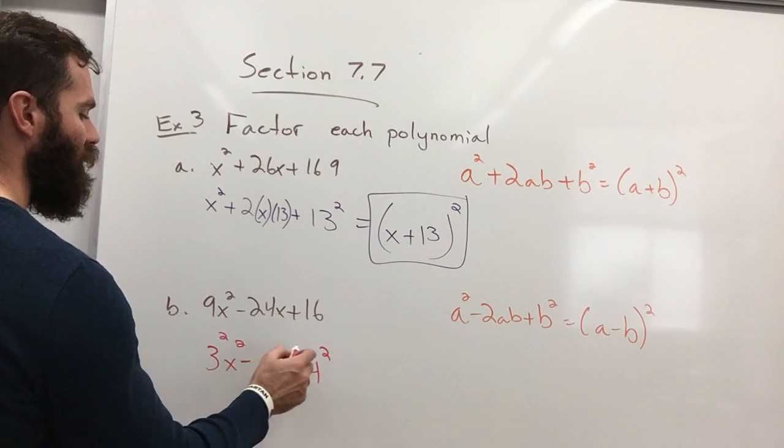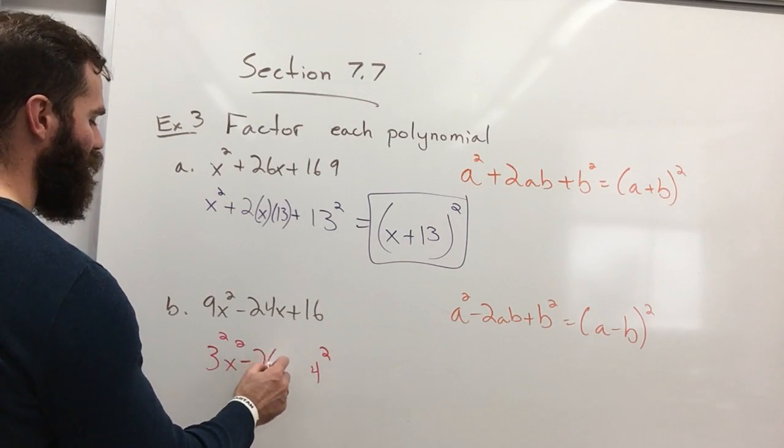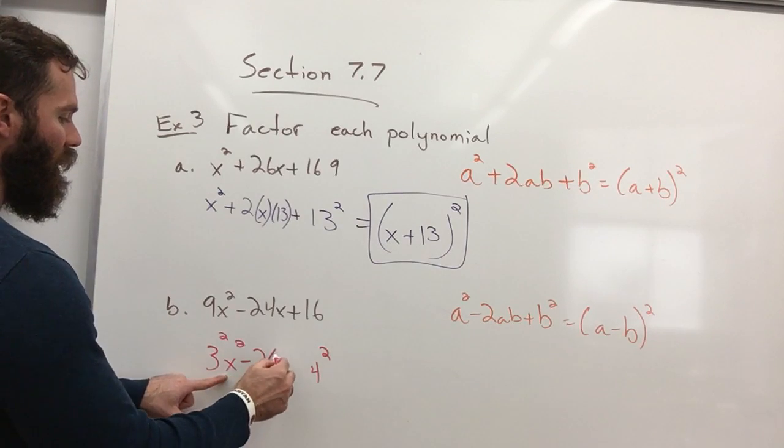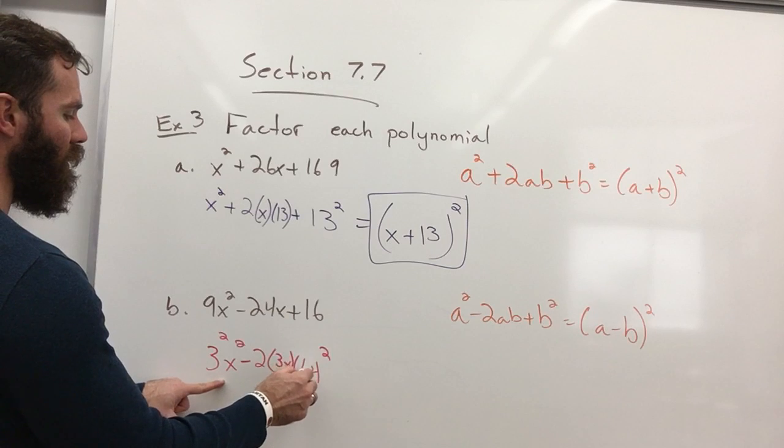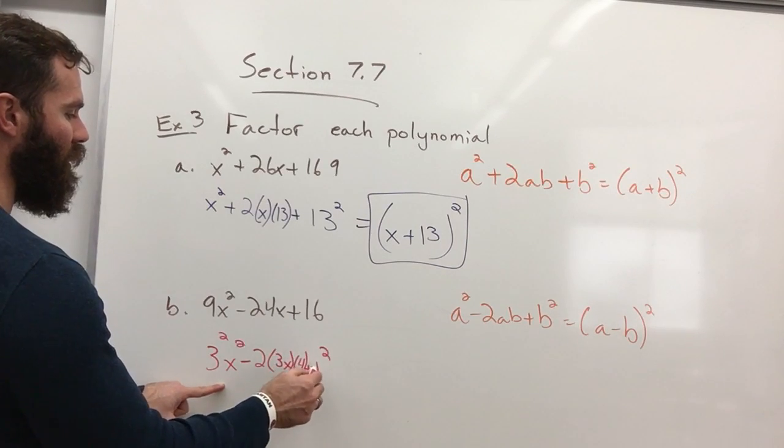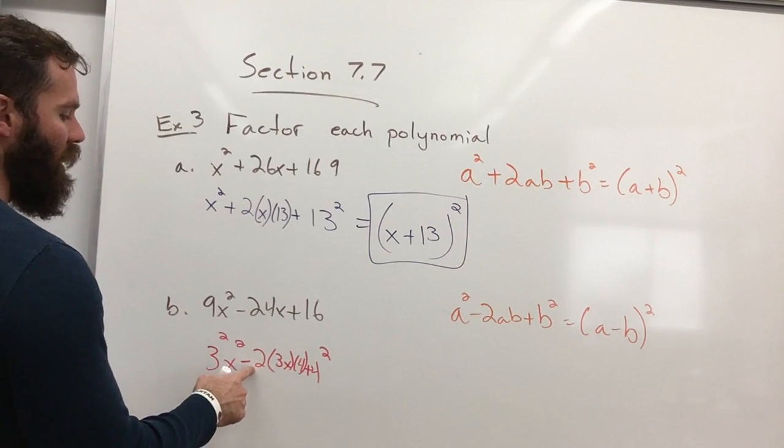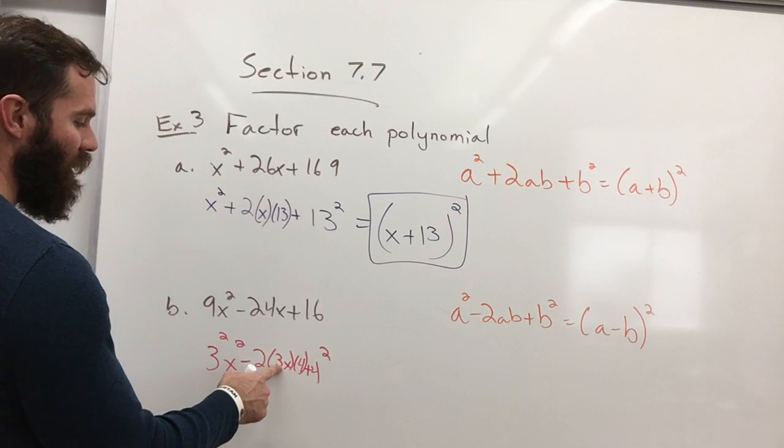Once again, we're going to do 2 times a, which is 3x, times b, which is 4, plus 4 squared. So a negative 2 times 3x is negative 6x.